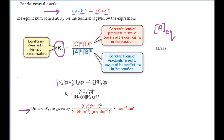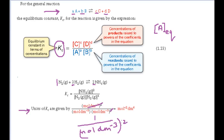You can cancel moles per decimetre cubed squared on the top line with moles per decimetre cubed squared on the bottom line, which leaves 1 over moles per decimetre cubed squared, which is equivalent to moles to the minus 2, decimetre to the power 6. For a different reaction, the concentration units in the expression for Kc may cancel out, so in that case Kc would have no units.